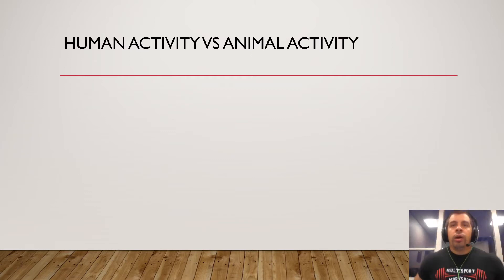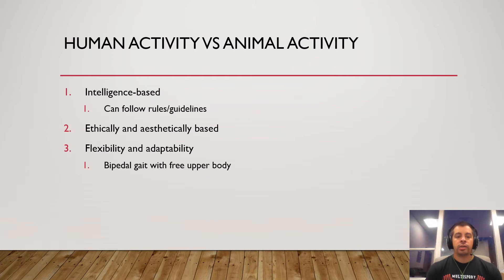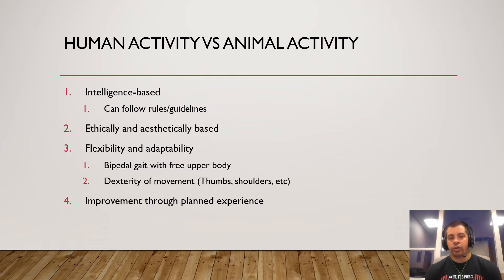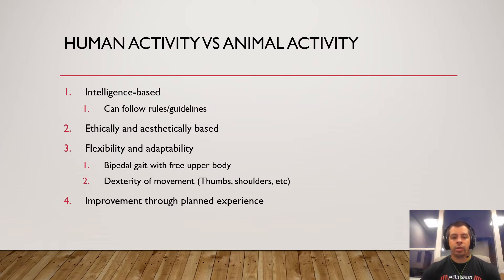How do we distinguish human activity versus animal activity? The book provides four steps. First, intelligence — animals do have some degree of intelligence, but they don't really follow rules or guidelines of a game. Second, ethically and aesthetically based — something might be within the rules of a competition but not be morally acceptable, and for the most part we try to obey morally acceptable rules.